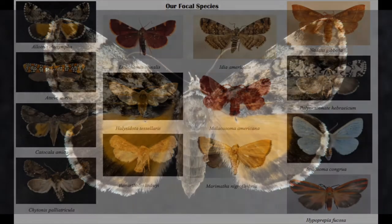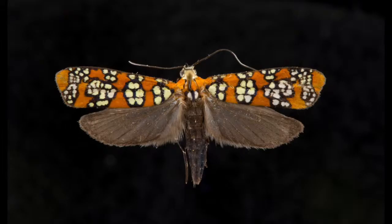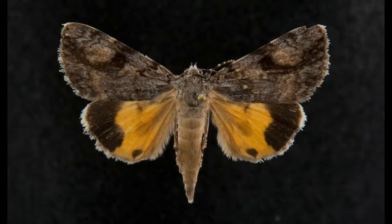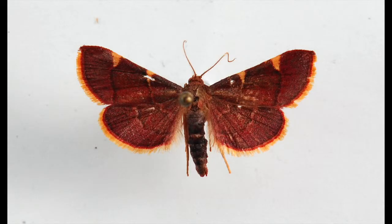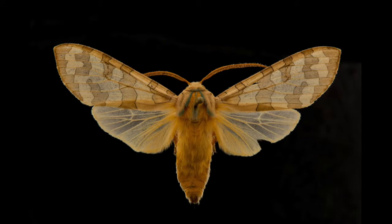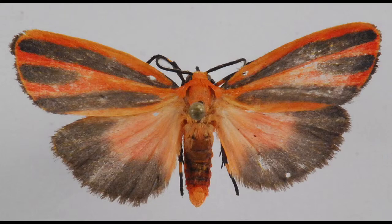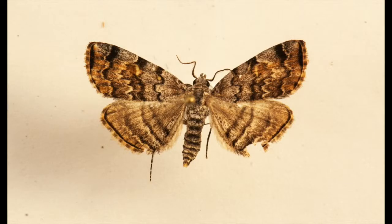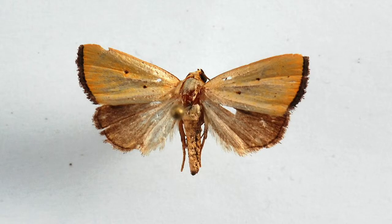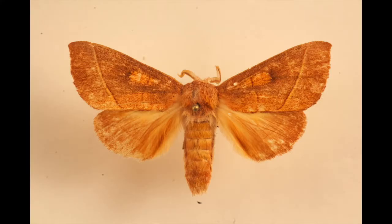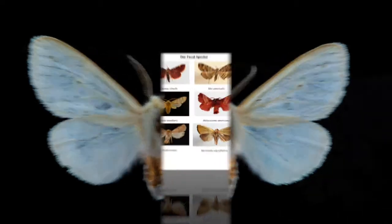Our focal species are Alotria elanimpa, Ativa aria, Catacula amica, Chitonix palantricula, Delacolia olinalis, Halcedota tessalaris, Hormothodes linzii, Hypopreptia fucosa, Idia americalis, Malachosoma americanum, Marimotha nigrofimbria, Nodata gibbosa, Polygrammite hubracium, and Spilosoma congrua.